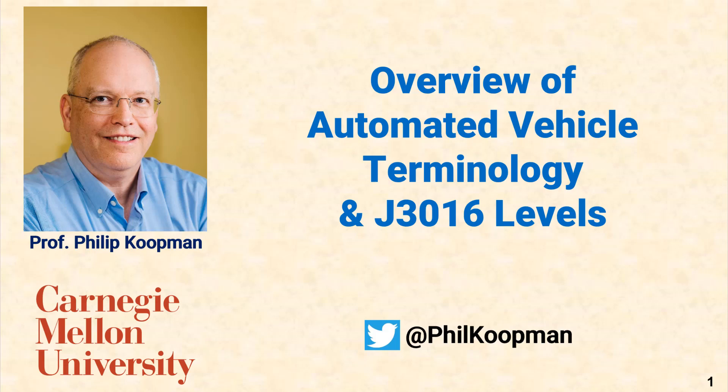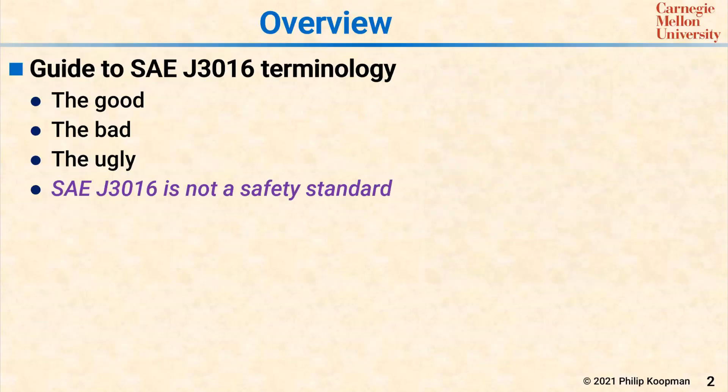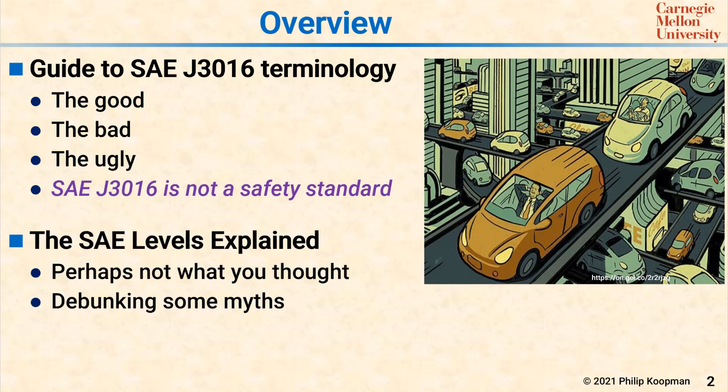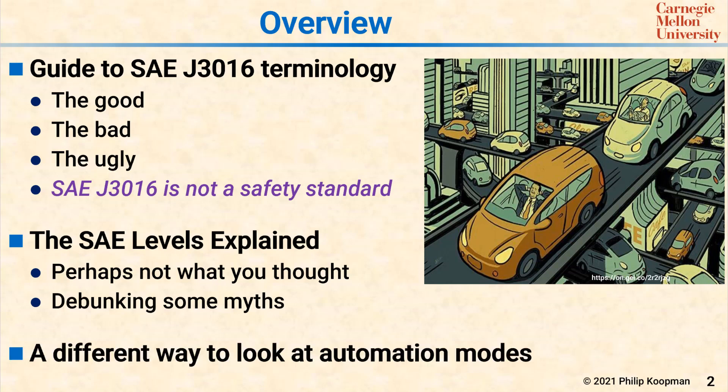This is Phil Kopman with an overview of automated vehicle terminology, including the SAE J3016 levels. In this talk, I'll start with a guide to SAE J3016 terminology and address an important point, which is that SAE J3016 is a terminology standard, not a safety standard. I'll go on to explain the SAE levels, which are perhaps not quite what you thought, and I'll debunk a number of myths that have arisen about things said to be in the standard but actually are not. I'll also include a different way to look at automation modes that might be more suitable for non-engineering audiences.